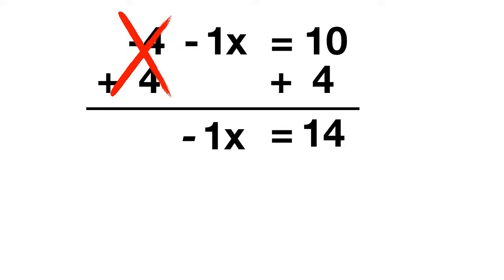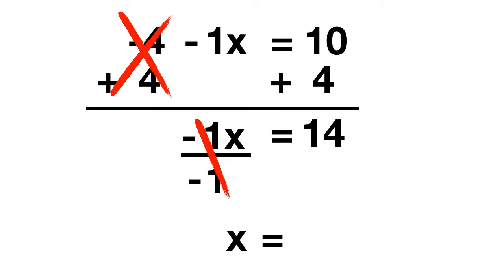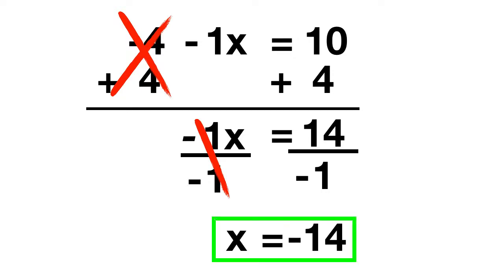Now all that is left is cancelling out the negative 1. To cancel the negative 1, divide by negative 1. That'll leave you with just x. On the other side of the equation, take your 14 and also divide by negative 1. That gives you your answer that x equals negative 14.